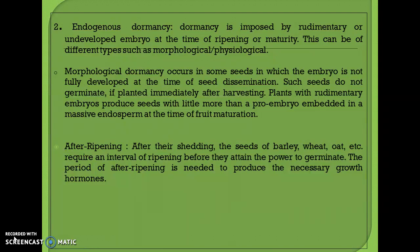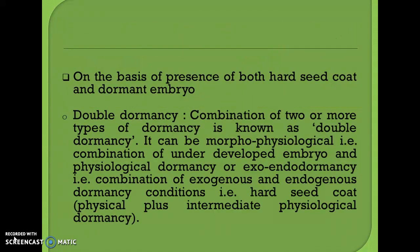Seeds with underdeveloped embryos may not germinate immediately if planted right after harvesting. The next type is physiological dormancy, also called after-ripening dormancy. After shedding, seeds of barley, wheat, and similar crops require an interval of ripening before they attain the power to germinate. This period of after-ripening is needed to produce the necessary growth hormones, and this type of dormancy falls under endogenous dormancy.